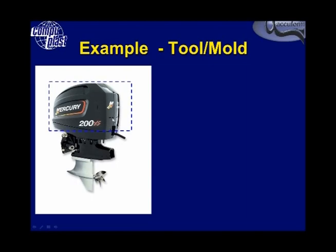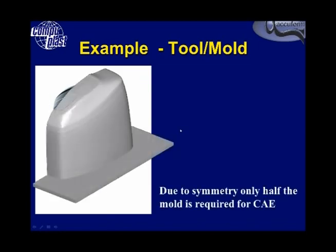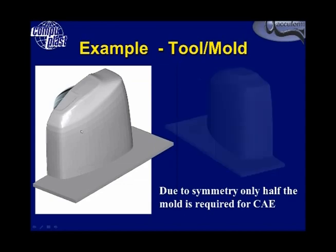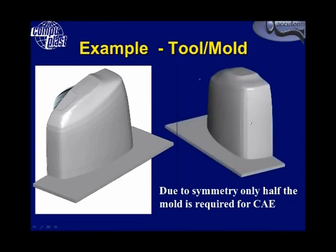This is the mold that was used, and because of symmetry we only need to use half of it, saving ourselves some computer time. Here's a rear view and a view from the front — that's basically the shape that we want.